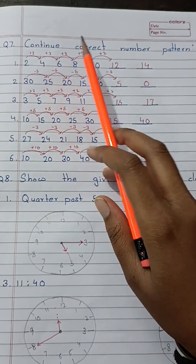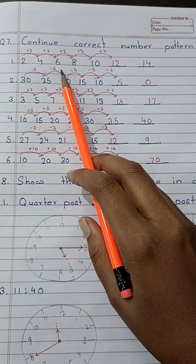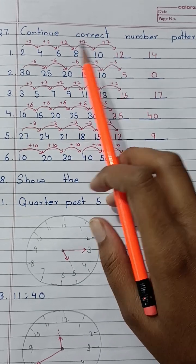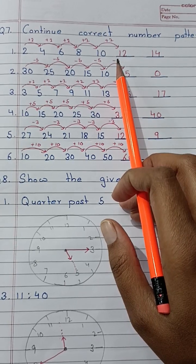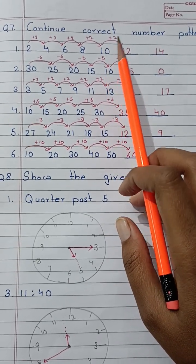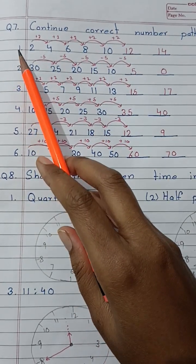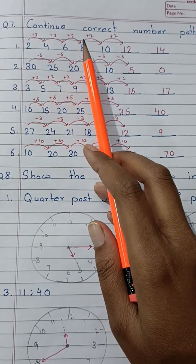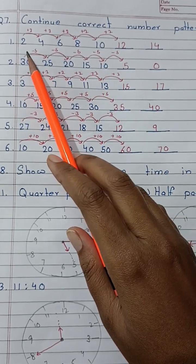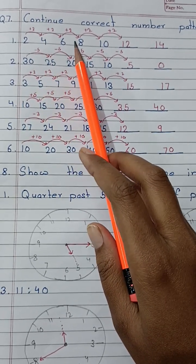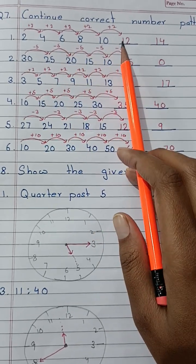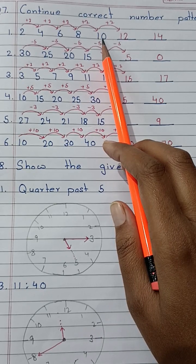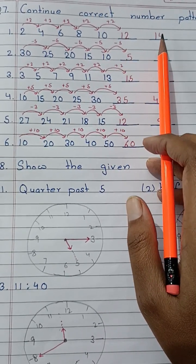First, we will start with continue correct number pattern. In this question, there will be some numbers given to you in the form of a series. You have to identify the pattern between these numbers and then write down the next numbers that will come after the last number. Like in the first question, the numbers given are 2, 4, 6, 8, 10. As you can see, each number has a difference of 2 from its previous number. So what will we do here? We will simply add 2 to the last number, that is 10. So the next number will be 12 and the last number will be 14.